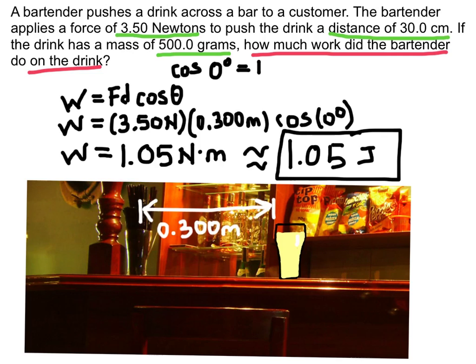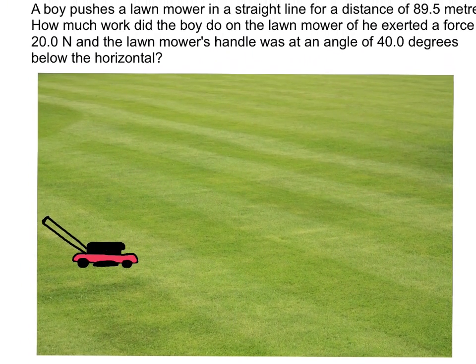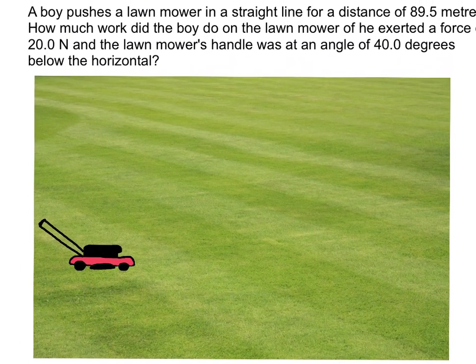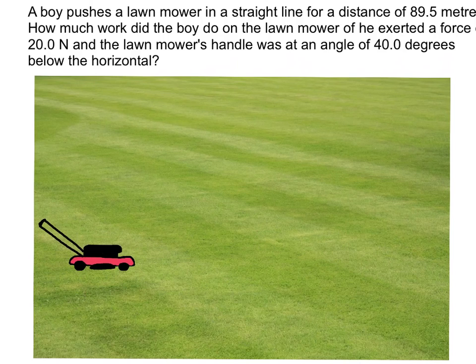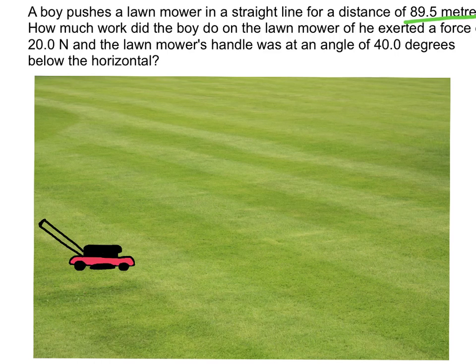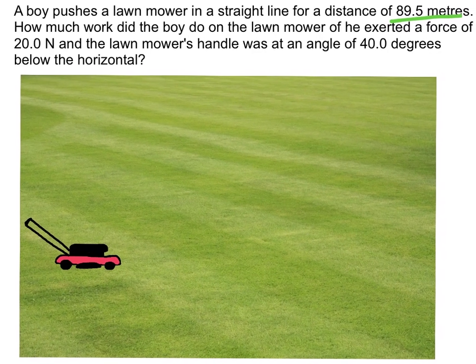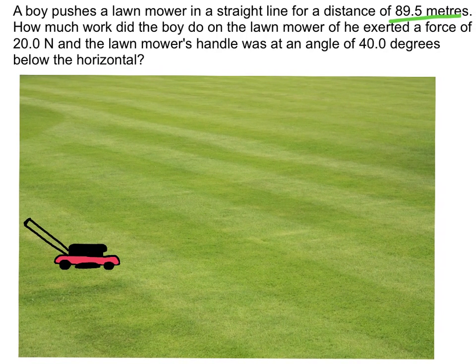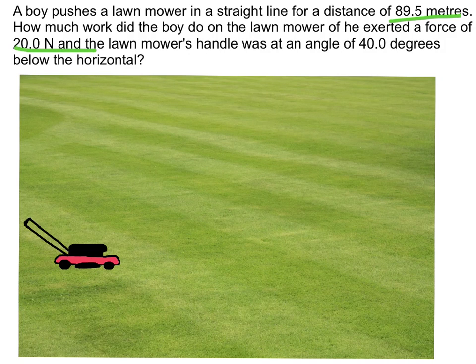Now the force and distance here were traveling in the same direction. Let's take a look at a situation where they're not in the same direction. A boy pushes a lawnmower in a straight line for a distance of 89.5 meters. How much work did the boy do on the lawnmower if he exerted a force of 20 newtons and the lawnmower's handle was at an angle of 40 degrees below the horizontal?